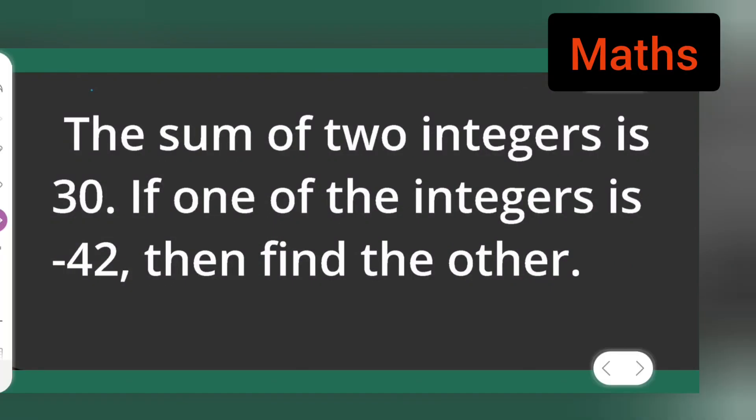So, in today's class of mathematics, today's question is: the sum of two integers is 30. If one of the integers is -42, then find the other.